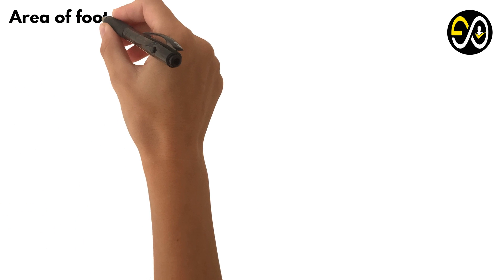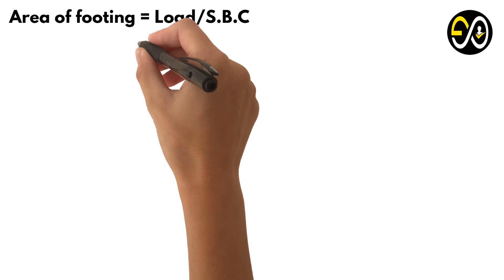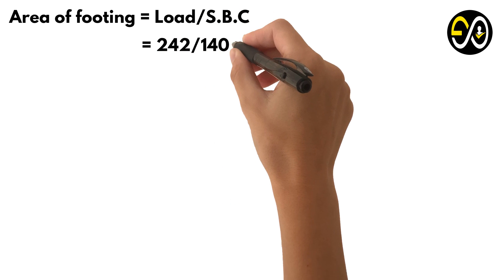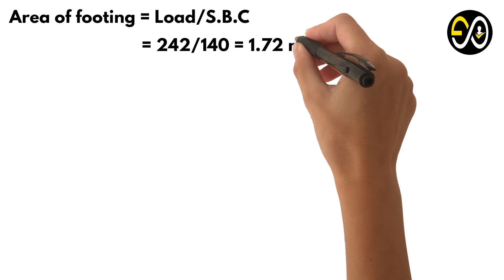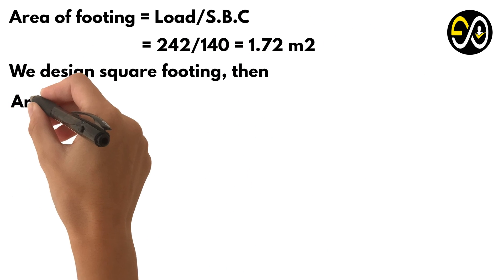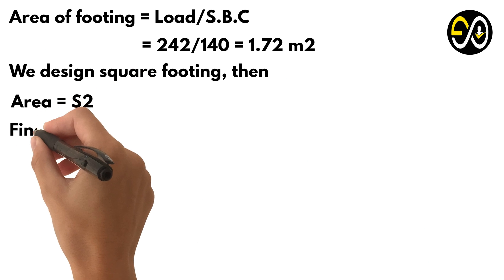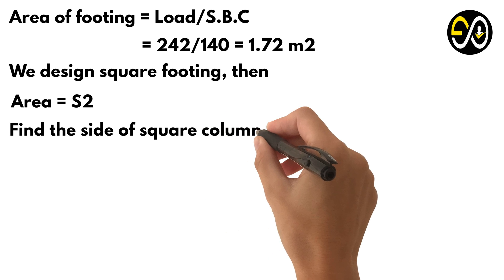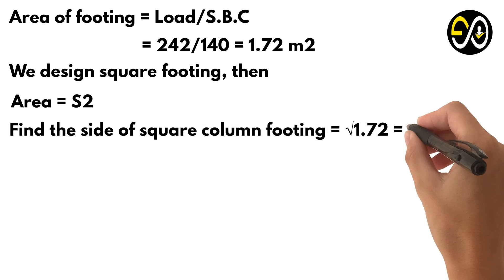Area of footing equals load over bearing capacity, equals 242 over 140, equals 1.72 square meters. We design square footing, so area equals S squared. Find the side of the square footing: square root of 1.72 equals 1.30 meters.